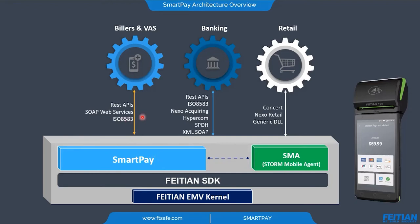We have multiple protocols that help us communicate with various systems, like biller and value-added service systems, the banking system, and retail systems. For example, we have SWAP web service and ISO 8583, which is the international standard for financial transactions. We have the Nexo Retail protocol, which defines a set of interfaces between card payment applications and a retail point-of-sale system. We also have the Cancer protocol, the generic DLL protocol, and Nexo Acquiring, which is a protocol that offers next-generation international card payment.